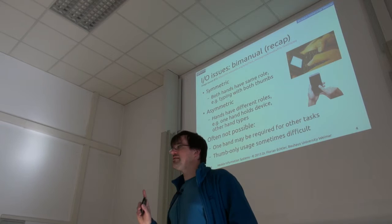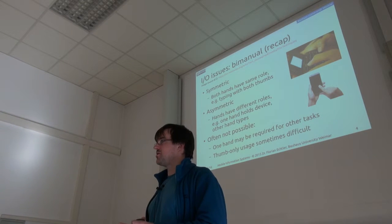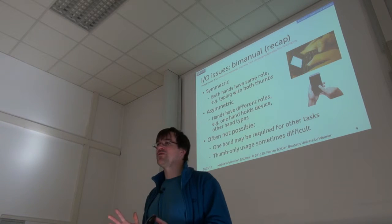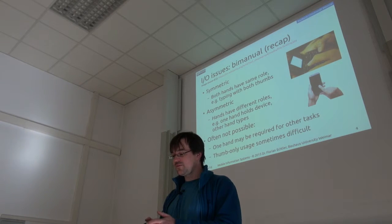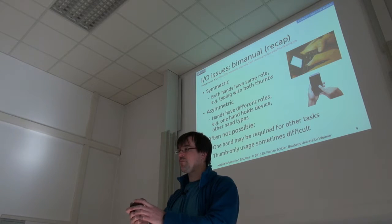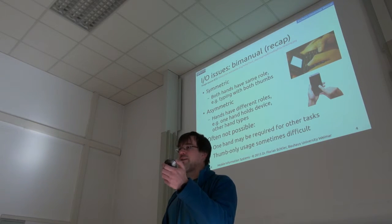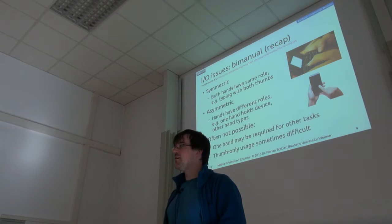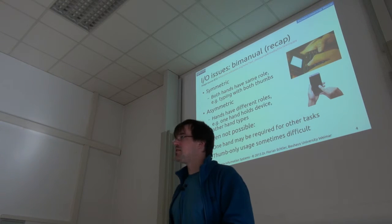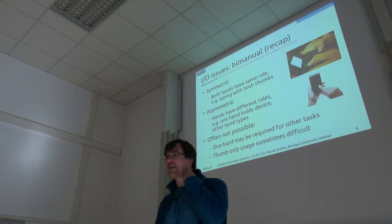Let's look back at bimanual interaction. We have different ways of interacting with a device using two hands. Symmetric interaction uses both hands in the same way, like typing. Bimanual asymmetric interaction would be holding the device in one hand and typing with the other. Unimanual interaction means holding and using the device with one hand because the other hand is occupied.